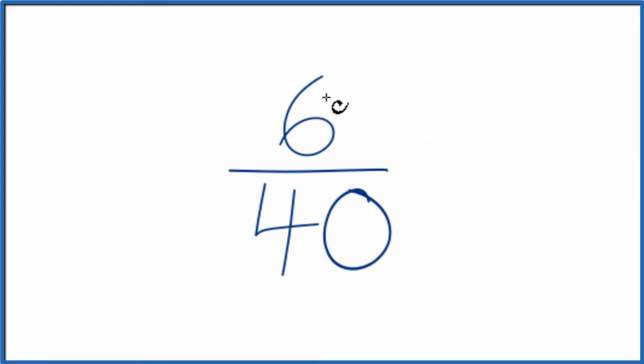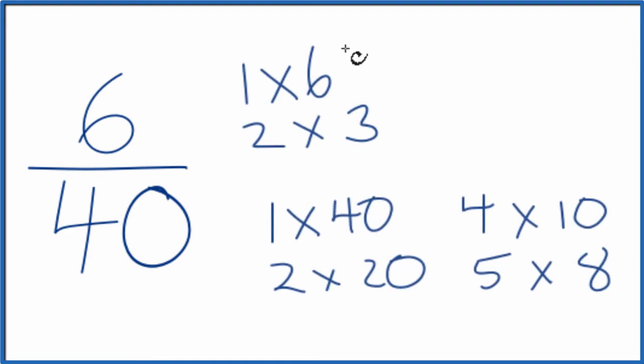We need to find a factor that goes into 6 and 40 evenly. Here are the factors for 6 and 40. I look at the factors and I'm trying to find the greatest factor that goes into both numbers. The only thing I'm seeing is that 2 goes into 6 and 2 goes into 40. That's our greatest common factor.